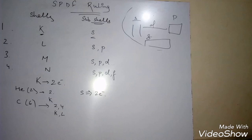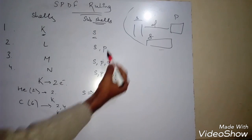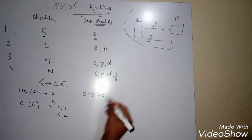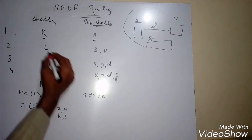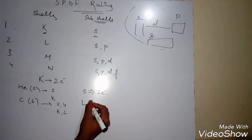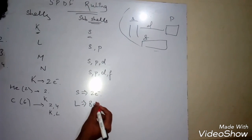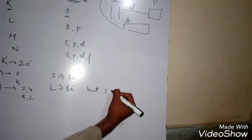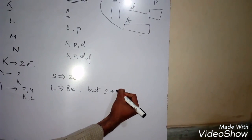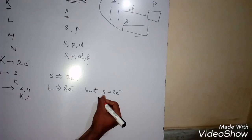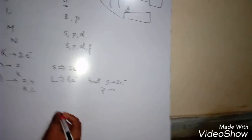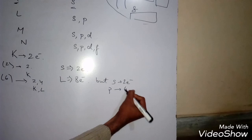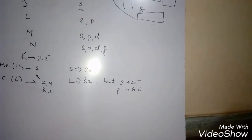In the L shell, S contains two electrons as before. The L shell holds a total of eight electrons. Since S holds two electrons, we can easily find the number of electrons in P: eight minus two equals six. So P holds six electrons.